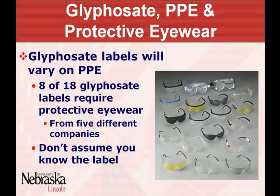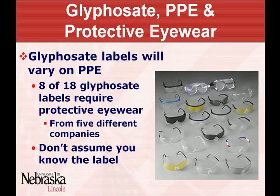Labels can vary for the same active ingredient in terms of what PPE is required. For example, with glyphosate labels — a few years ago, 8 out of 18 glyphosate labels I looked at required eye protection and the others didn't. You might be using a product that didn't require eye protection and switch to one that did, and if you didn't read the label, you'd find yourself out of compliance. Keep in mind those regulations are there for a reason — usually there's a specific reason why eye protection is needed for a particular formulation.